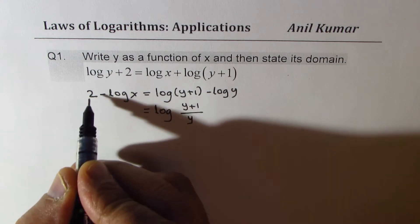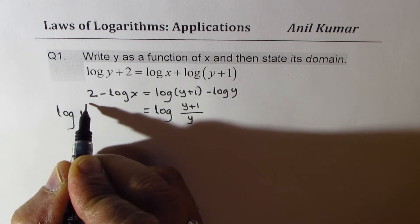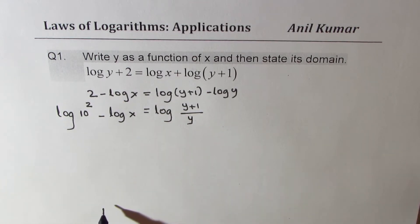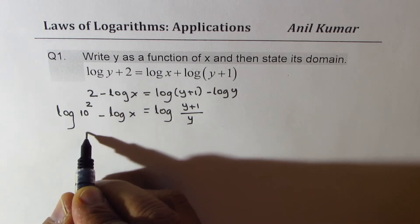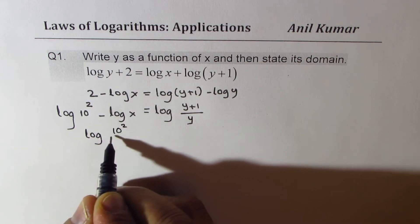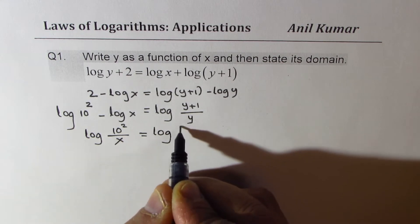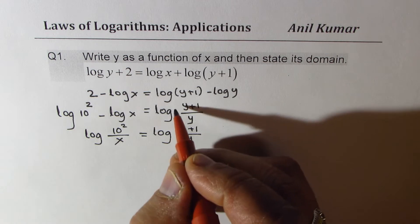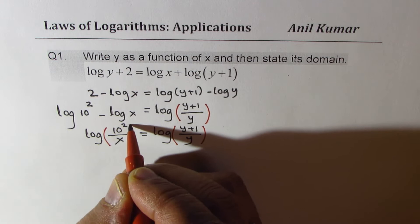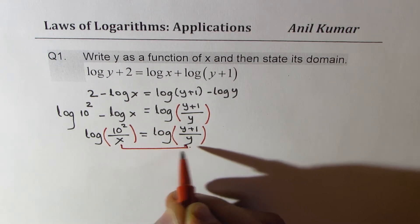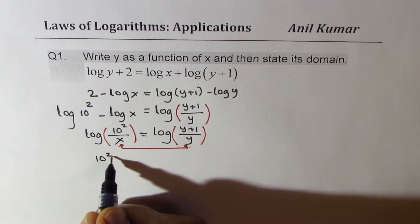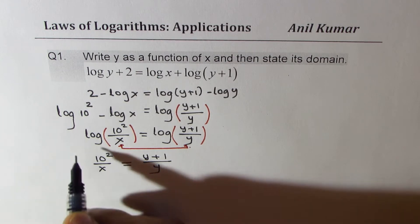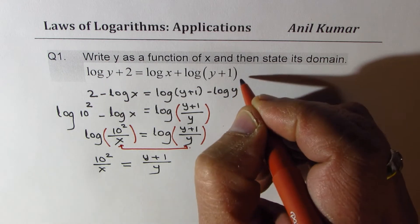For the left side, the trick is that in base 10, the number 2 can be written as log(10²), since log(10²) = 2. So we replace 2 with log(10²), giving us a common base. Now the left side becomes log(10²/x), which is log(100/x). So we have log(100/x) = log((y+1)/y). Since both sides have the same log, the arguments must be equal: 100/x = (y+1)/y.